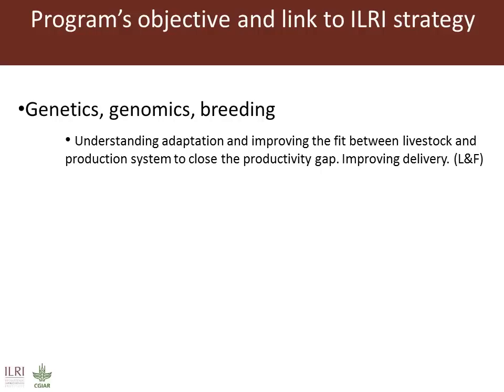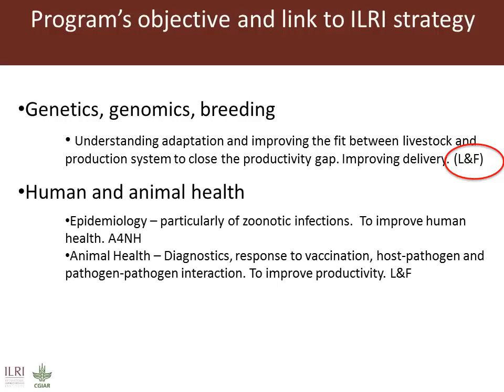On the back of that, we have research aimed at improving delivery. There's not much point in developing an improved set of genetics if you don't know how you can deliver it to the farmers. And that's aligned with the Livestock and Fish CRP.